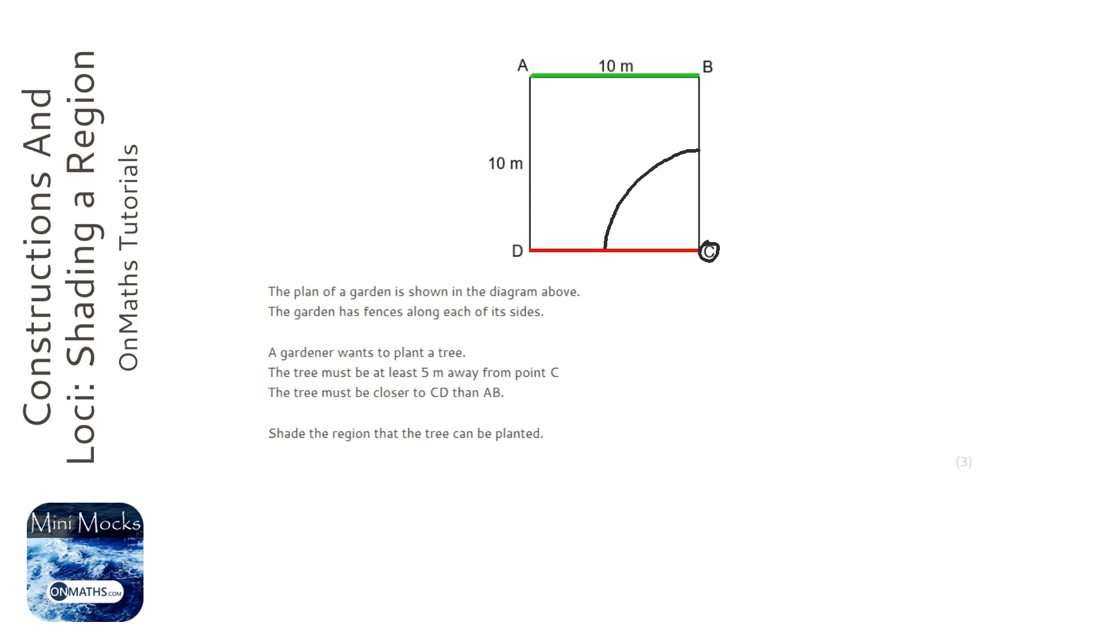Now to do this you need to do a perpendicular bisector of AD or BC, either one would work. So you get your compass and put it at point A, and you measure out something that's more than five centimeters, it doesn't matter how much more. And you do an arc, like a bit of the circle this side and a bit of the circle this side.